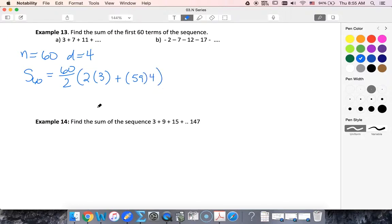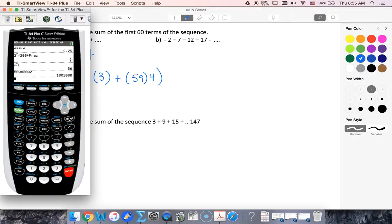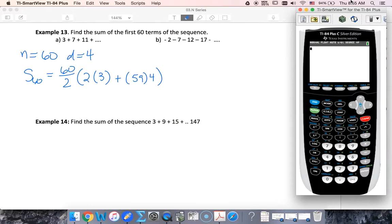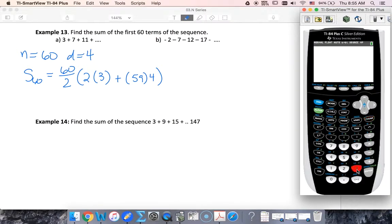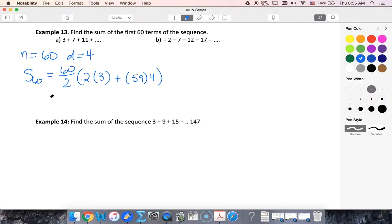So now I've got something to put into my calculator. 30 times 6 plus 59 times 4 and I get 7,260.